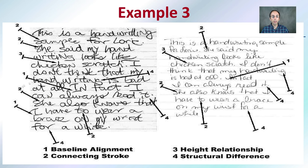And lastly, just example three here, looking at some of the other things you can take into consideration. The baseline alignment, connecting strokes, the height relationships, and structural differences. Written with a little bit of a different sentence here. Just again, something to act as comparison. So the more samples you can see, like anything, the better you'll get at making comparisons and picking out some of the small details.